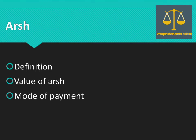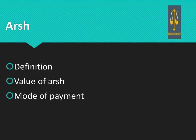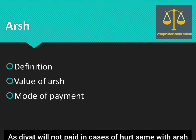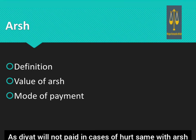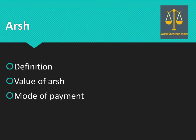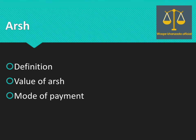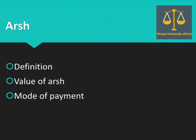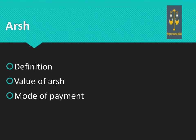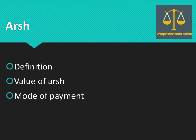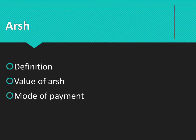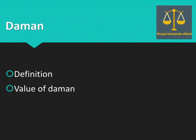The third kind of punishment is Arsh. Arsh is the kind of compensation payable for causing hurt. جس طرح Diyat hurt کی cases میں نہیں دی جا سکتی، اسی طرح Arsh بھی قتل کی cases میں نہیں دیا جا سکتا۔ The period of installment for Arsh must not exceed three years. اگر convict Arsh کی value ادا نہ کر سکے because of poor financial condition تو پھر اسے جیل بھیج دیا جائے گا۔